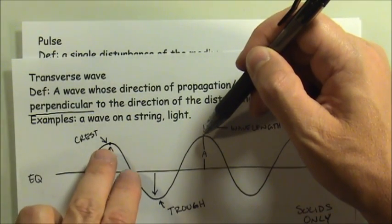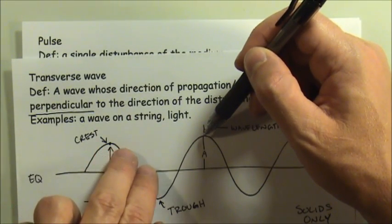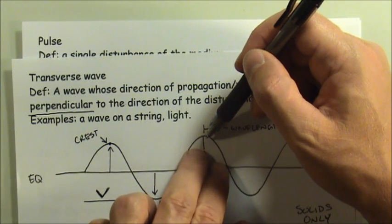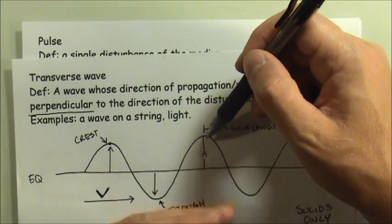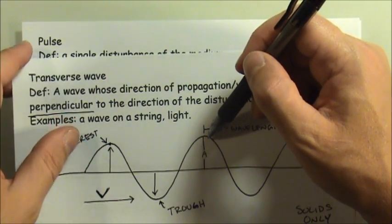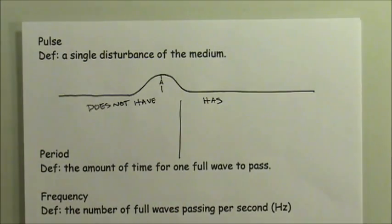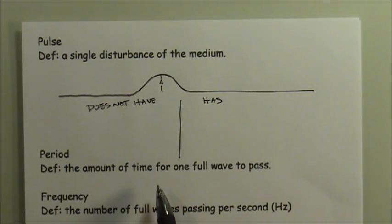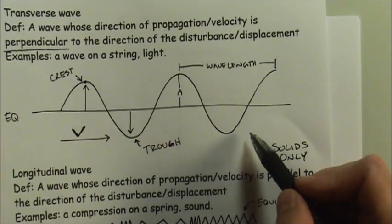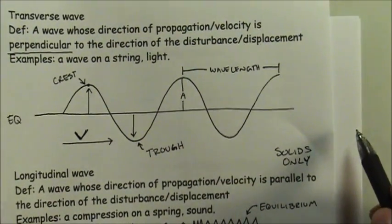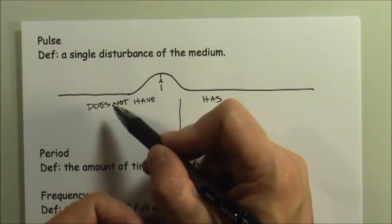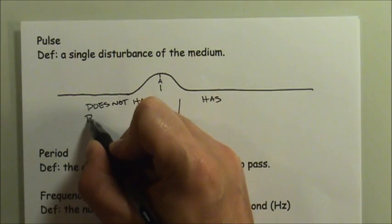With a traveling wave, this crest will move to the right until eventually it arrives at the same place where the next crest currently is. That will take some period of time, referred to as the period of the wave - the amount of time for one full wave to pass by if you're standing and watching. But a pulse doesn't have any counterpart; there is no other portion that's going to show up.